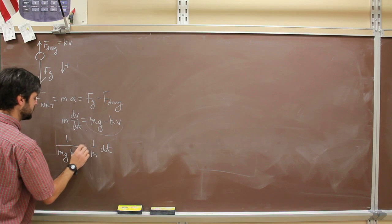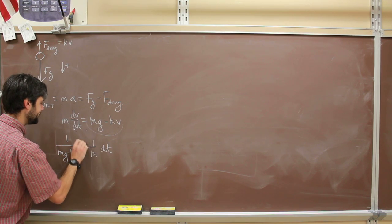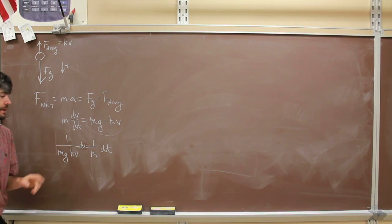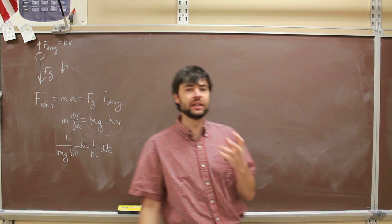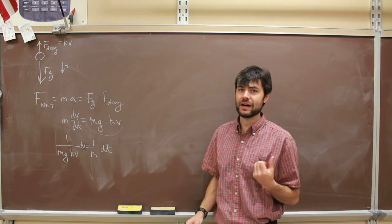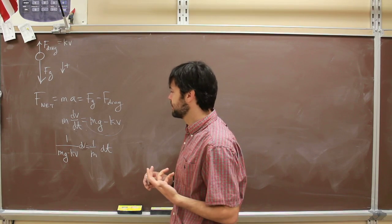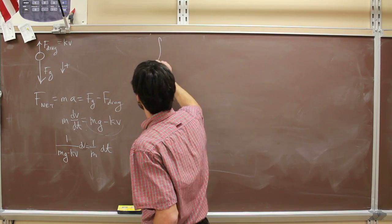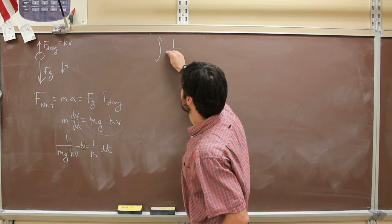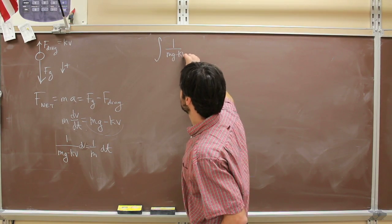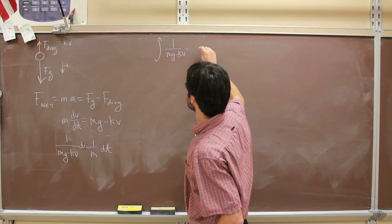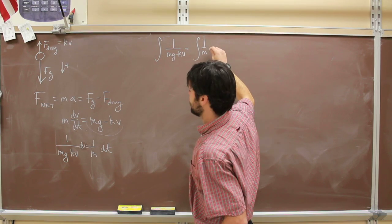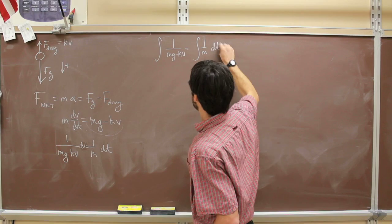Oh, whoa, I can't leave out my dv. There's my dv. Now remember, dv is just telling me what I need to do my integral on. So now I'm ready to throw the integral sign in there. So I have the integral of 1 over mg minus kV dv is equal to the integral of 1 over m dt.